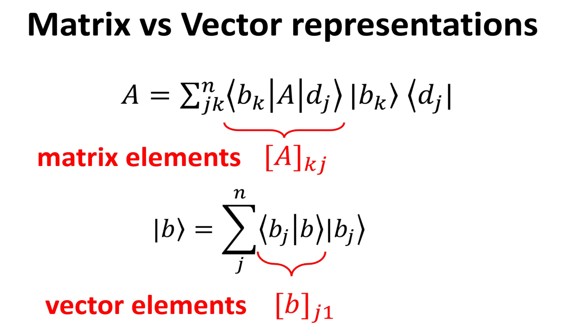In summary, the completeness relation provide a formal way of enumerating the matrix elements of an operator, and the vector elements of a vector.